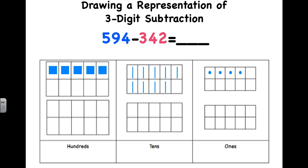Now, we're taking away 342. If you remember correctly, what place do we start taking away from first? If you said the ones, you're correct. So, 342 says we take away two ones. One, two.